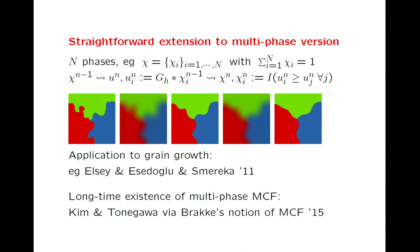Here is the multi-phase version, and in a certain sense this is what makes it interesting — essentially the same idea works for the multi-phase version. You describe a partition of space by corresponding characteristic functions that sum to one. You do exactly the same thing: a convolution step, then ask which characteristic function is largest at a given point. In a purely academic numerical simulation with a fairly irregular partition, you mollify it, ask which of the three functions dominates, and get a new arrangement.